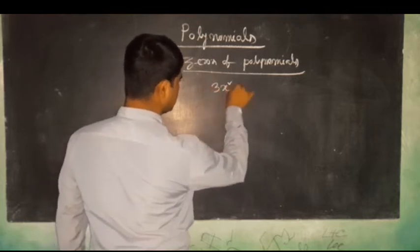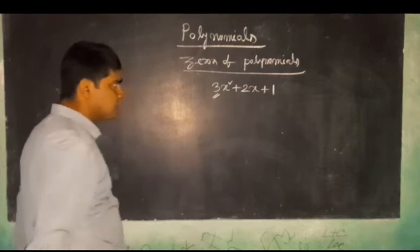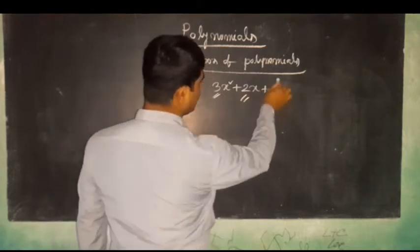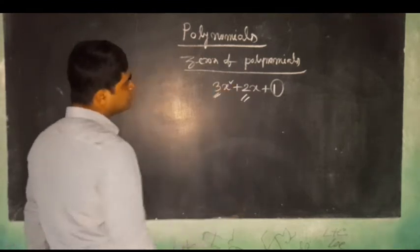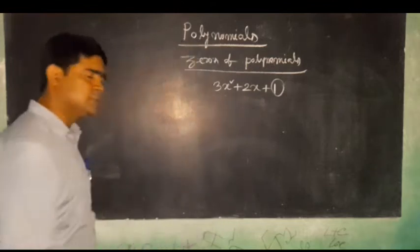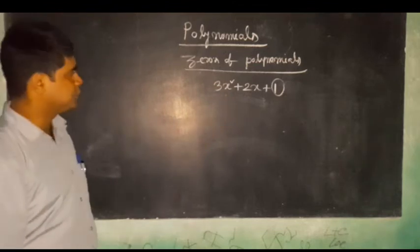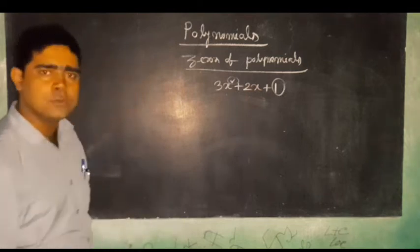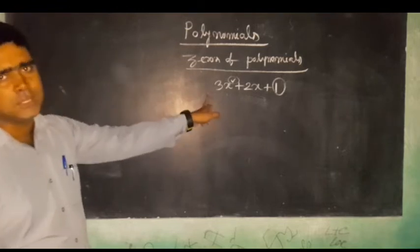The polynomial we are considering is 3x squared plus x minus 1. Here, 3 is the coefficient of x squared, 1 is the coefficient of x, and minus 1 is the constant term. Since the power of the polynomial is 2, the number of zeros is 2. So now we have to find out the zeros of this quadratic polynomial.